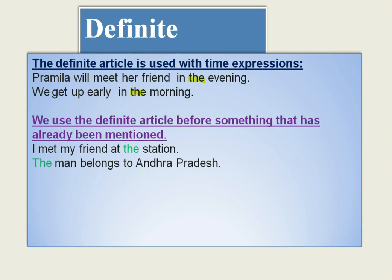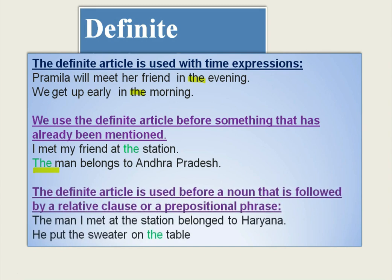Similarly, 'The man belongs to Andhra Pradesh' — we are speaking about a particular person already referred to. When speaking about a particular person already mentioned, we use the definite article. The definite article is also used before a noun followed by a relative clause or a prepositional phrase. For example: 'The man I met at the station belongs to Haryana.'